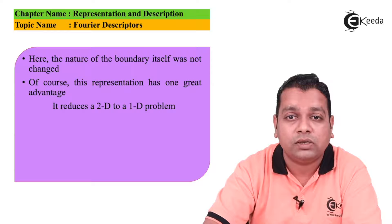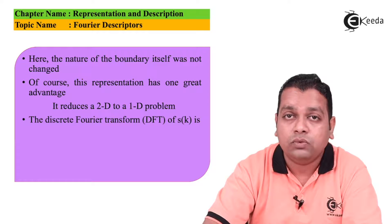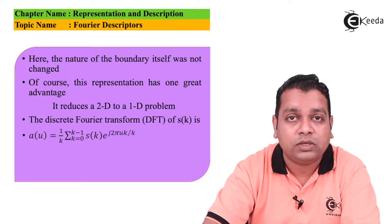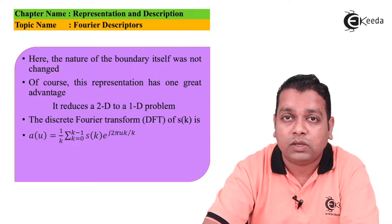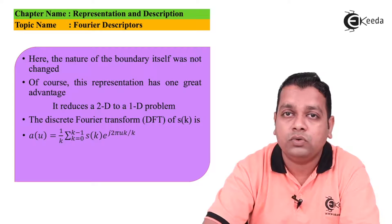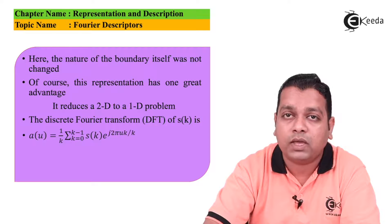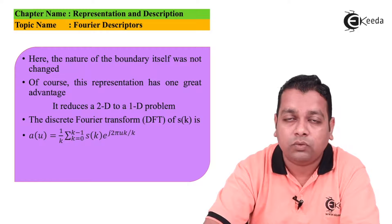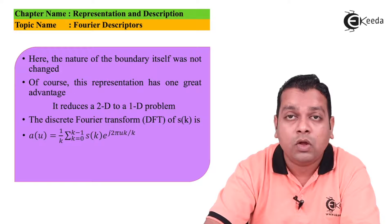The discrete Fourier transform, which we have already covered in chapter three on image transforms, comes from signal theory. It is first the one-dimensional DFT, and for images we use the 2D DFT. The DFT of s(k) is given as a(u) = (1/K) · Σ_{k=0}^{K-1} s(k) · e^{−j2πuk/K},